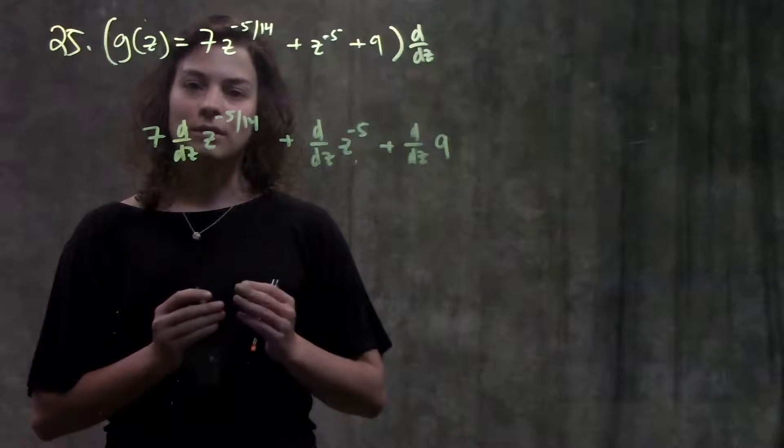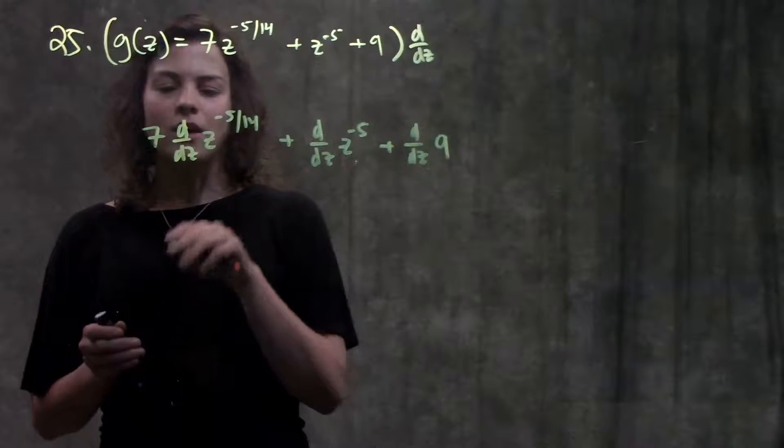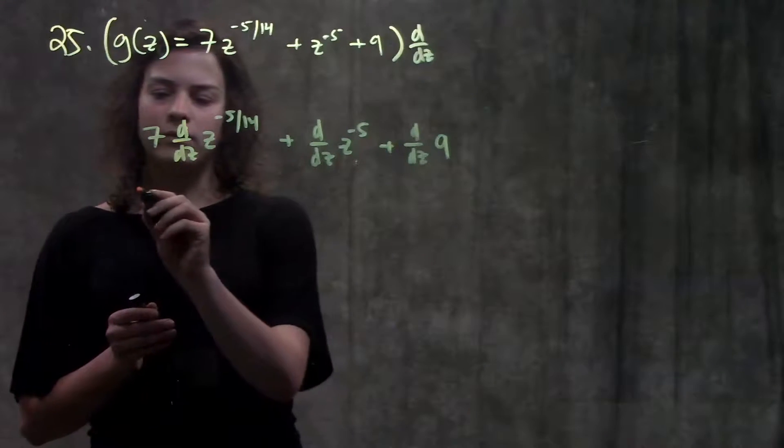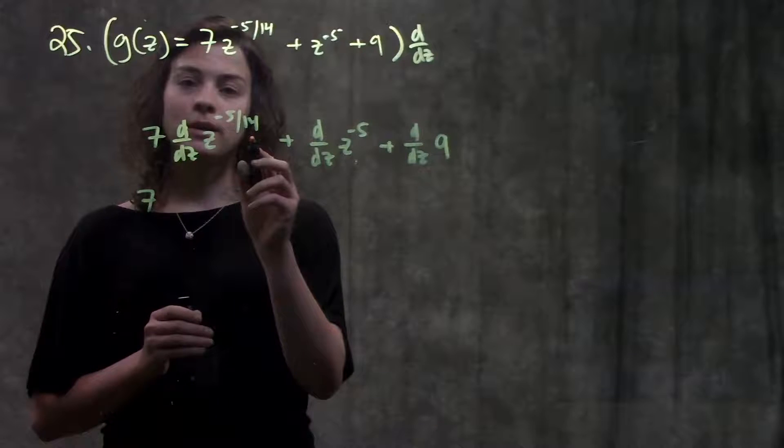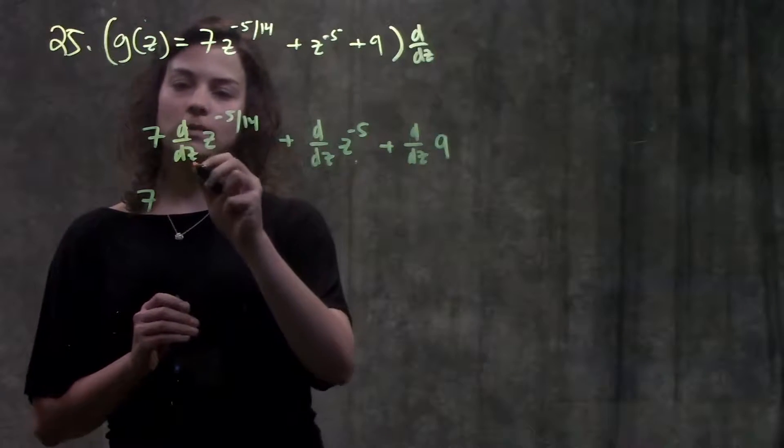Okay, now I'm going to go through and use those derivative rules that I learned in this section. So looking at this first part, I have 7 times, whenever I have an exponent, remember my rule tells me, bring the exponent to the front,